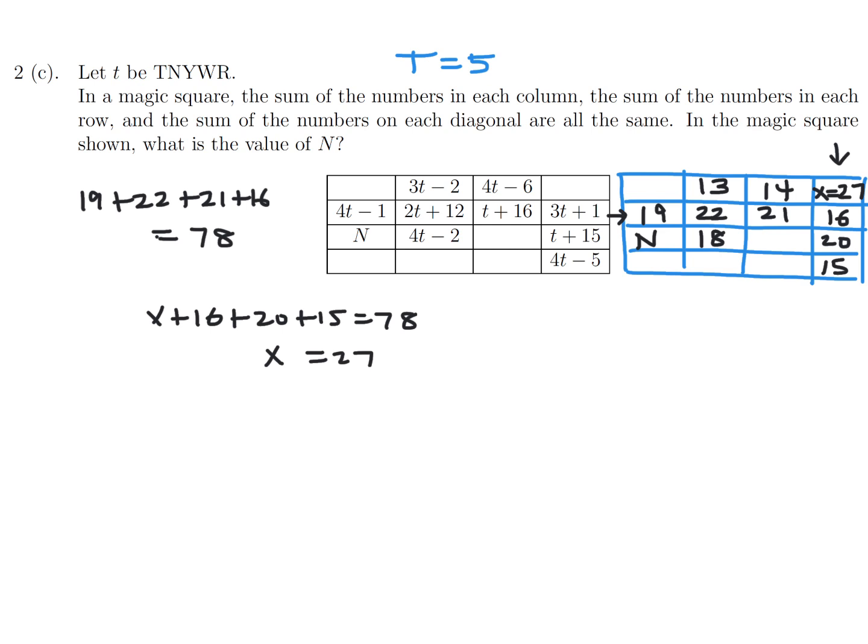Okay. So where do you want to go next here? Let's go with this diagonal. That y. So that means y plus 18 plus 21 plus 27 is 78. And when you solve for that y, you get 12. So that's a 12. And then where do you want to go next here? I think maybe this corner.